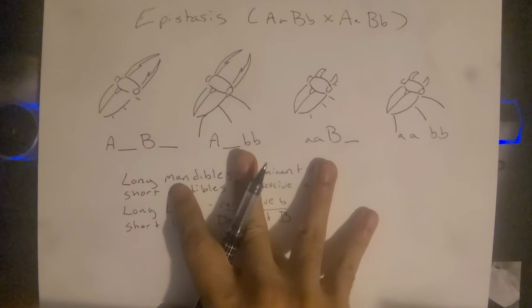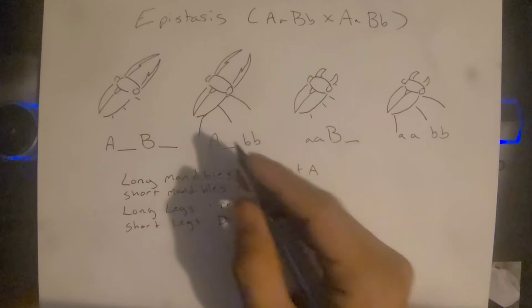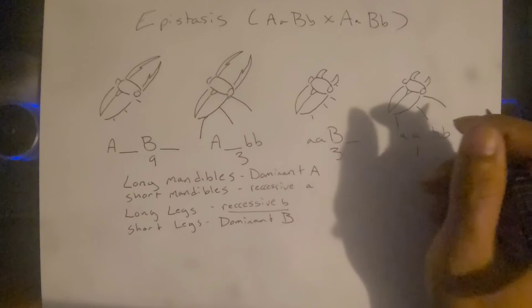So here we have the progeny, and under normal circumstances we're going to get a 9-3-3-1 ratio between these guys.